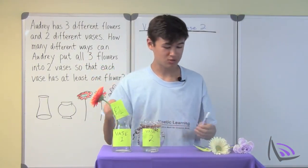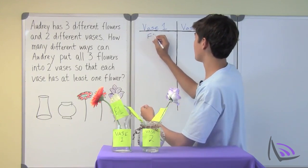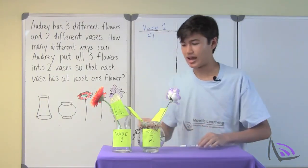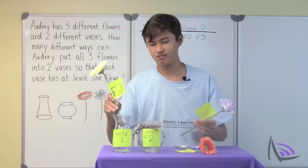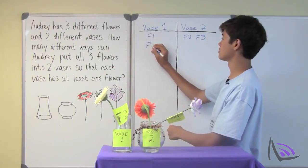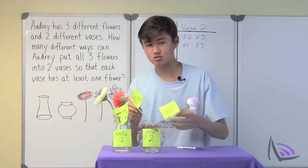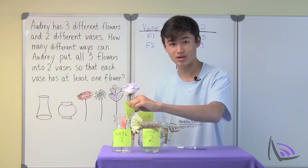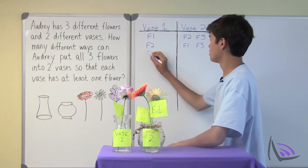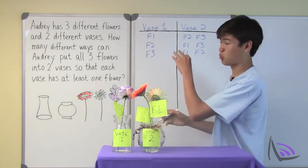Starting with one flower in vase one: first, we put F1 in vase one, which means F2 and F3 must be in vase two. Next, F2 goes in vase one, which means F1 and F3 are in vase two. Finally, F3 goes in vase one, so F1 and F2 go in vase two. That covers all the possibilities for when there's one flower in vase one.